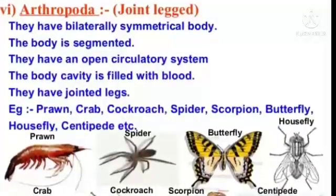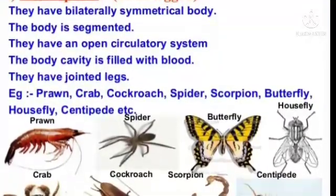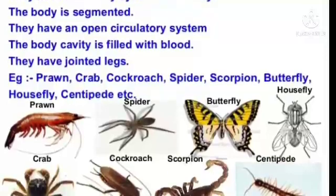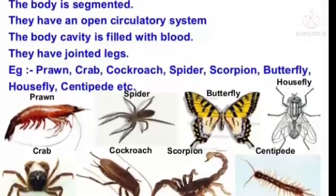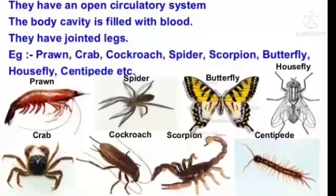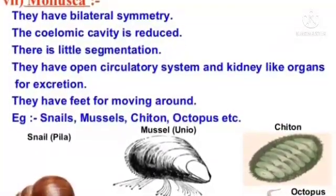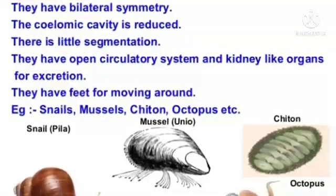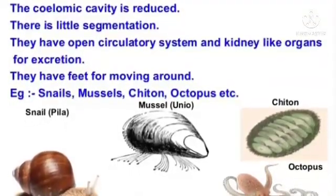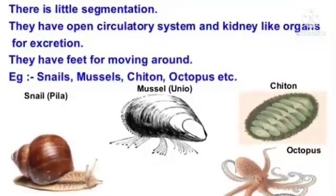Arthropoda: they have a bilaterally symmetrical, segmented body. They have an open circulatory system and the body cavity is filled with blood. They have jointed legs. Examples: prawn, crab, cockroach, spider, scorpion, butterfly, housefly, centipede, etc. Mollusca: they have bilateral symmetry. The coelomic cavity is reduced and there is little segmentation. They have an open circulatory system and kidney-like organs for excretion. They have a foot for moving around. Examples: snails, mussels, Chiton, octopus, etc.